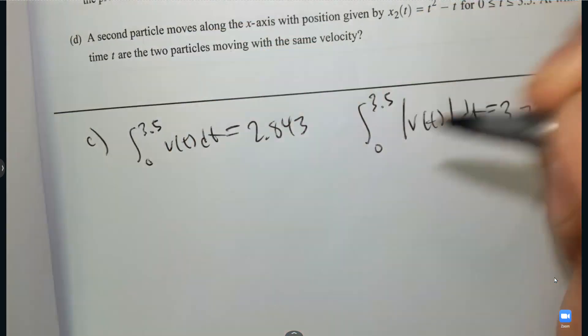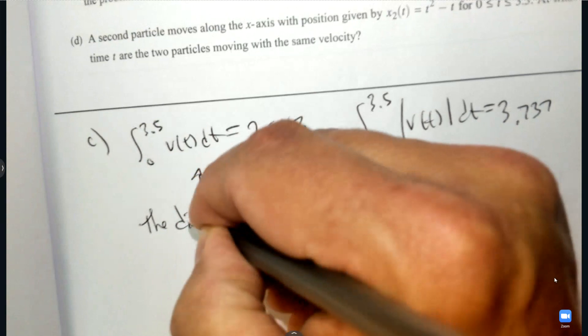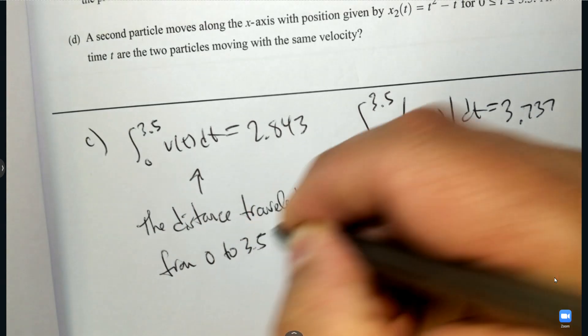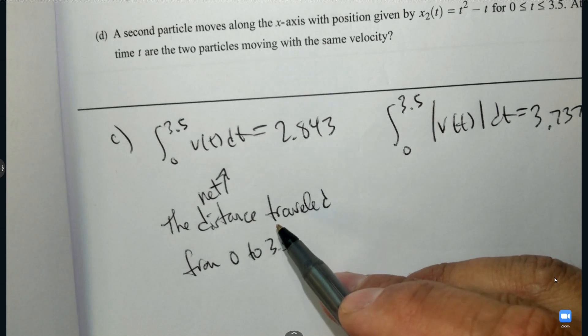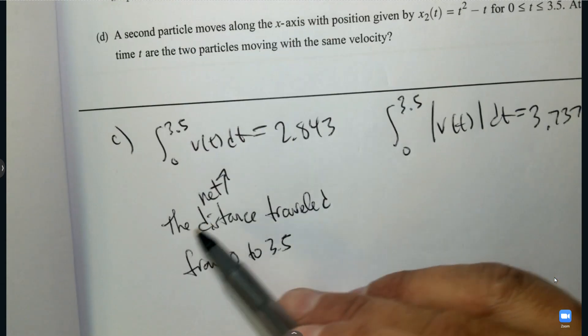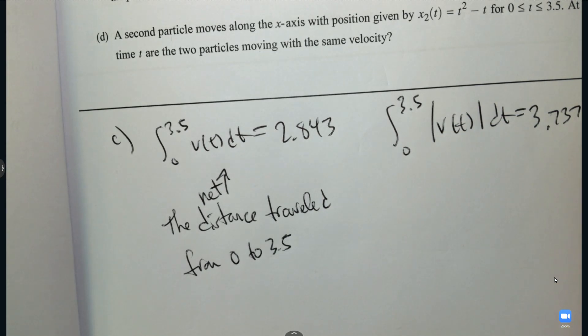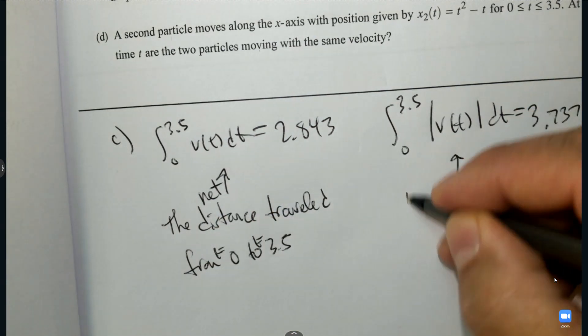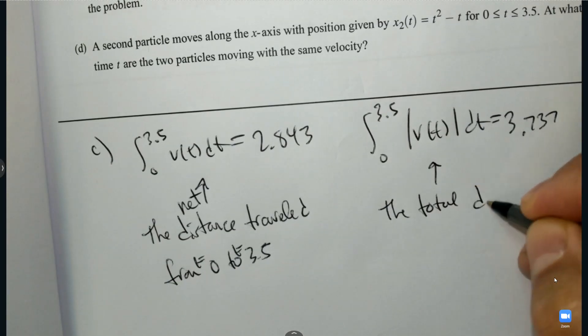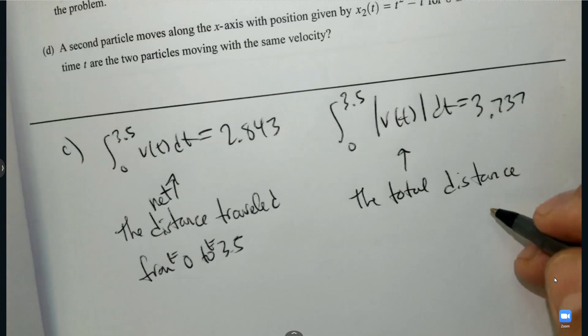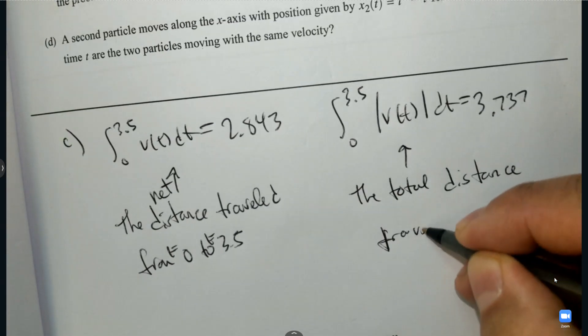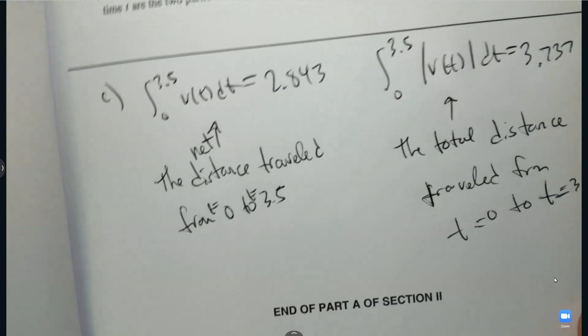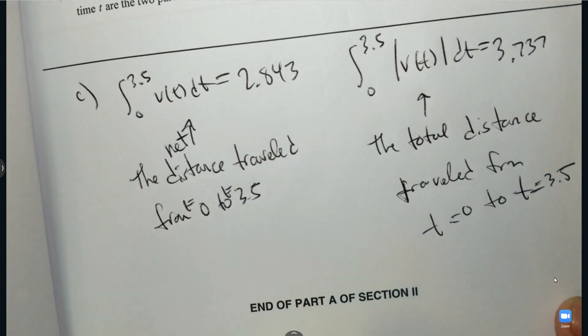And then how would you interpret it? And so this number, we can talk about the net distance or we can talk about the displacement. So the distance traveled from zero to 3.5. They didn't give you any units. And then how about this one? This is the key word, the total distance. So what is the absolute value of velocity? Notice how it shows up again and again. The total distance traveled from T equals zero to T equals 3.5. But the key distinction is this one is total distance and this one's not.